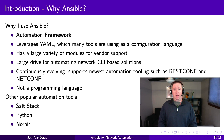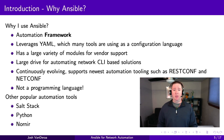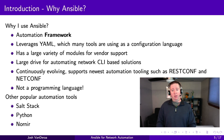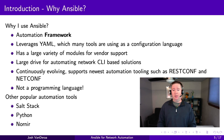Ansible has a large variety of modules for vendor support — at one point I counted 51 different modules, and you'll see that a bit later in the course. It has a large drive for automated network CLI-based solutions. Yes, there's brand new stuff out there that uses RESTconf, NETconf, and other things like that, but we all know we need to automate CLI, and Ansible is very good at doing that. Ansible also supports RESTconf and NETconf, which is nice.